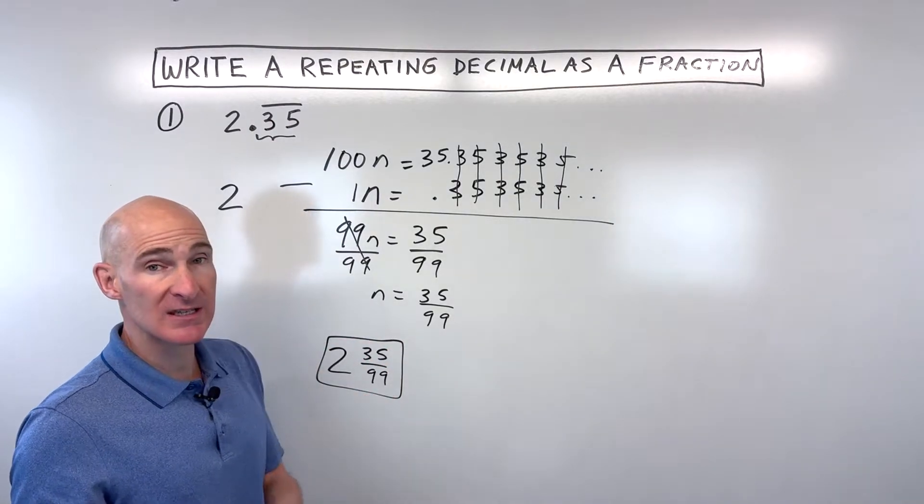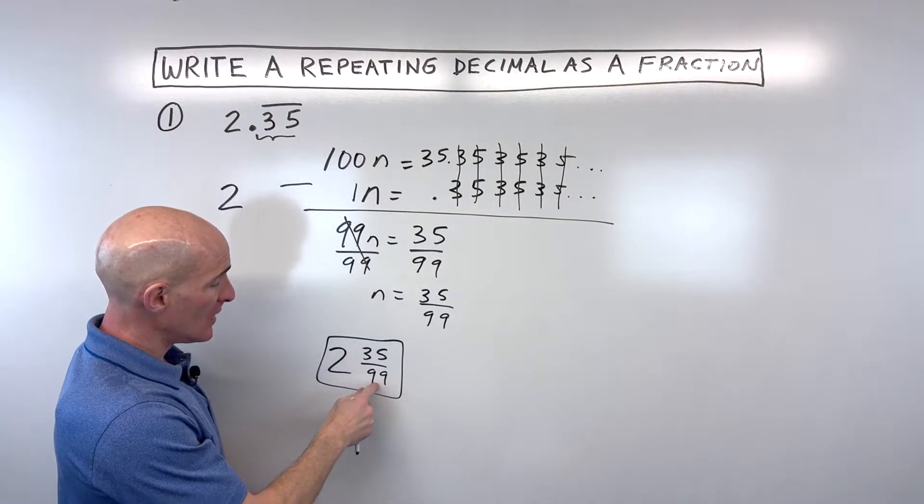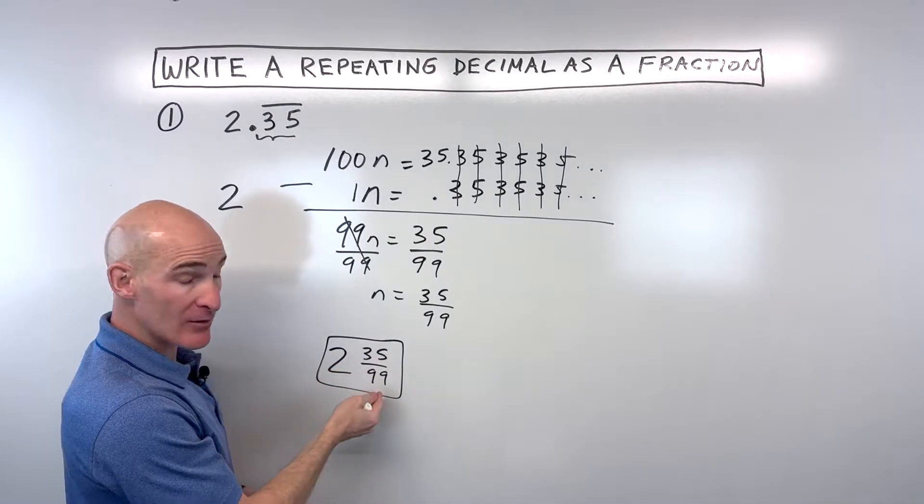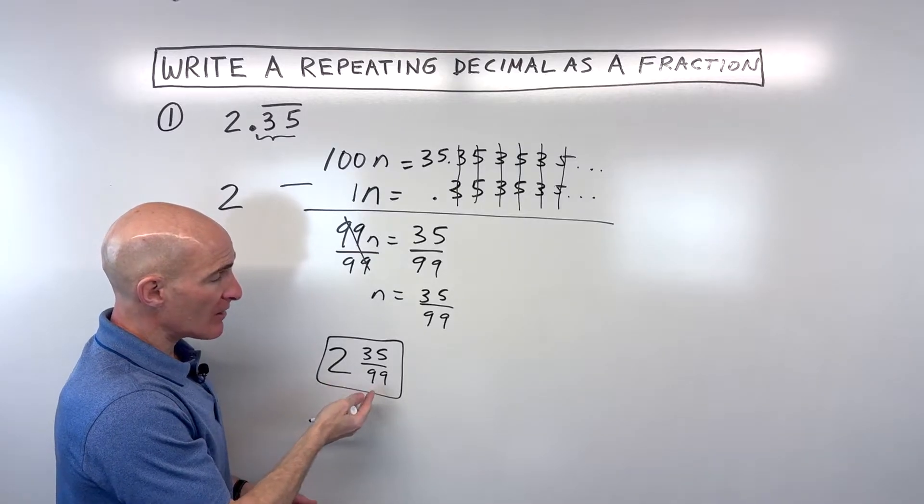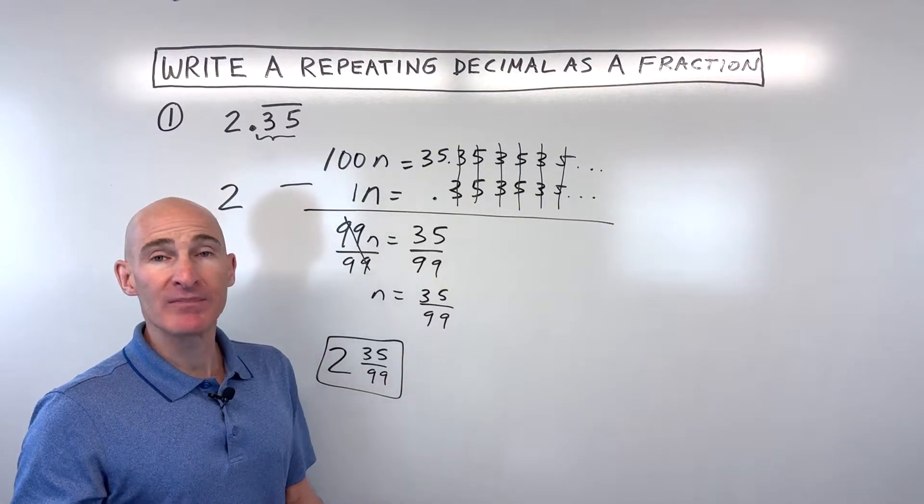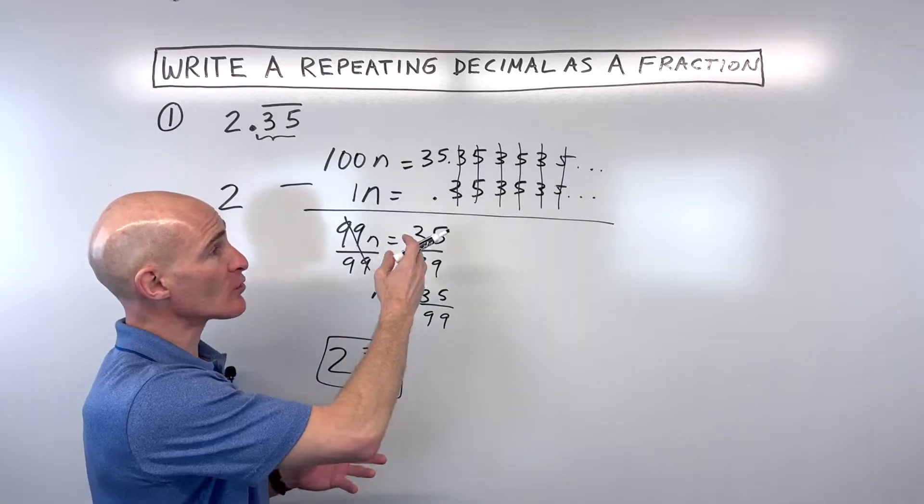So our number is going to be 2 and 35/99. Now if you want, you can write this as an improper fraction if you wanted to multiply 99 times 2 and add it to 35 and put that over 99. But this is basically rewriting it as a fraction as opposed to a repeating decimal.